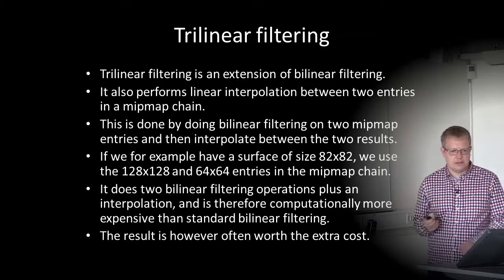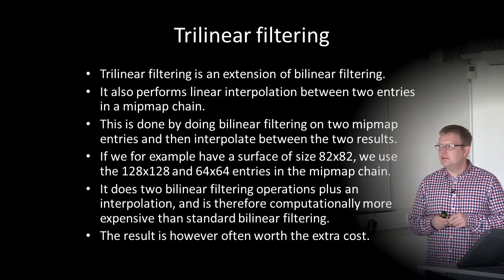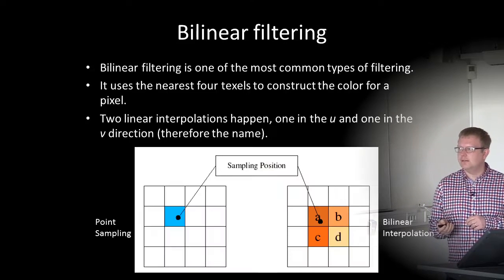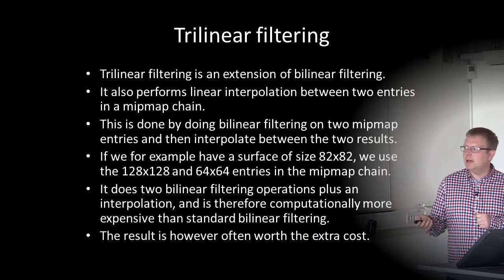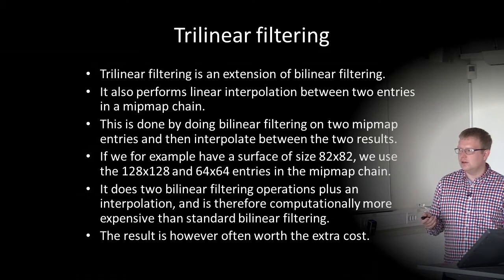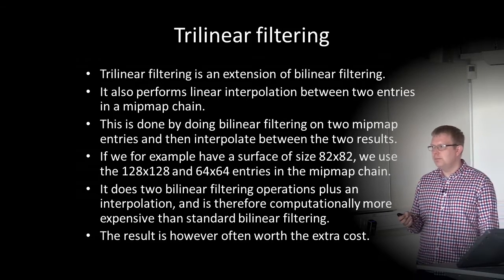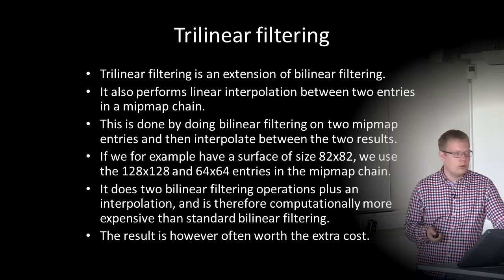Trilinear filtering is an extension of bilinear filtering that also performs linear interpolation between two entries in a mipmap chain. It does bilinear filtering on two mipmap entries and then interpolates between the two results. For example, for a surface of size 82×92, we use the 128×128 and 64×64 entries in the mipmap chain and interpolate between them. It performs two bilinear filtering operations plus an interpolation, making it computationally more expensive, but the result is often worth the extra cost.